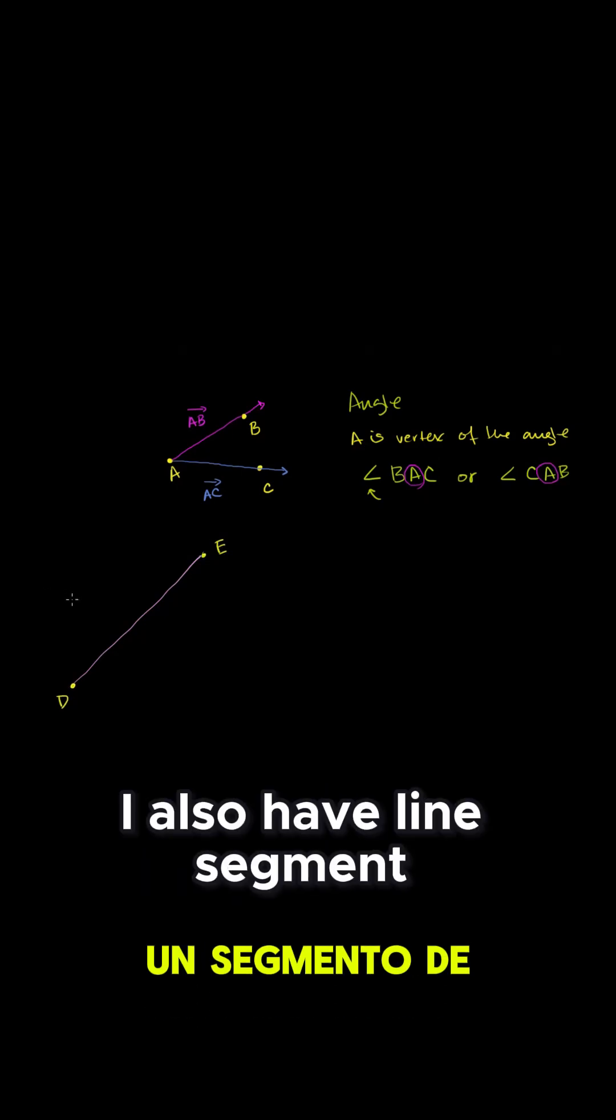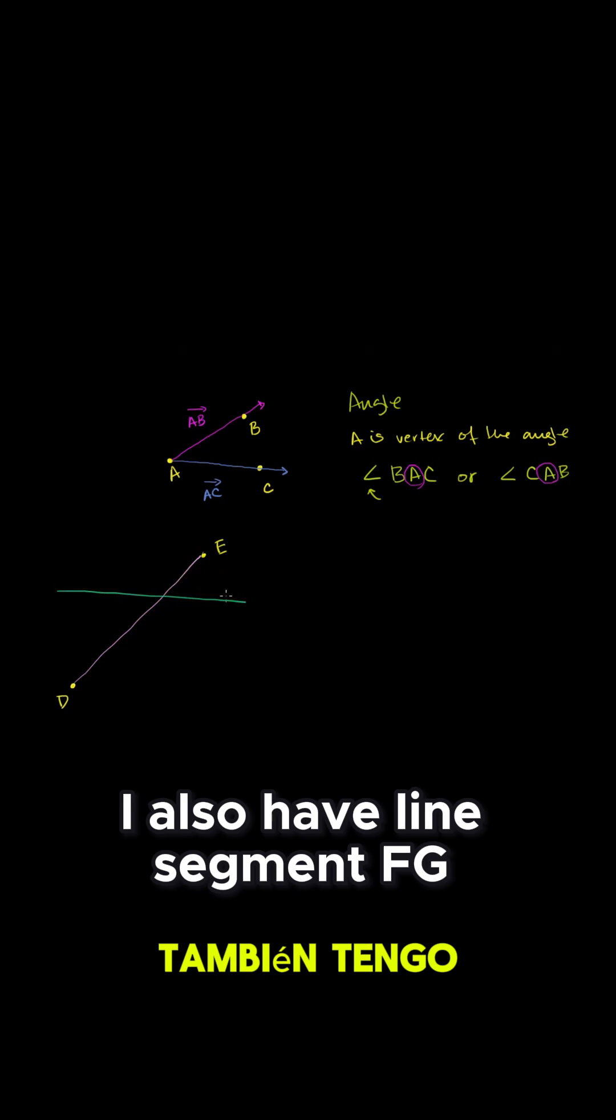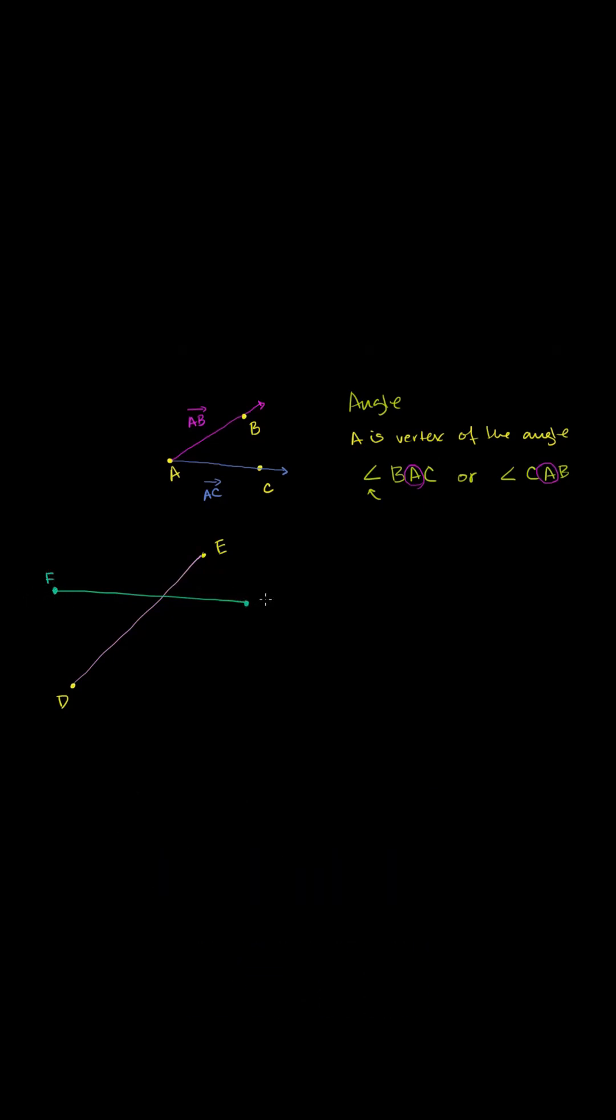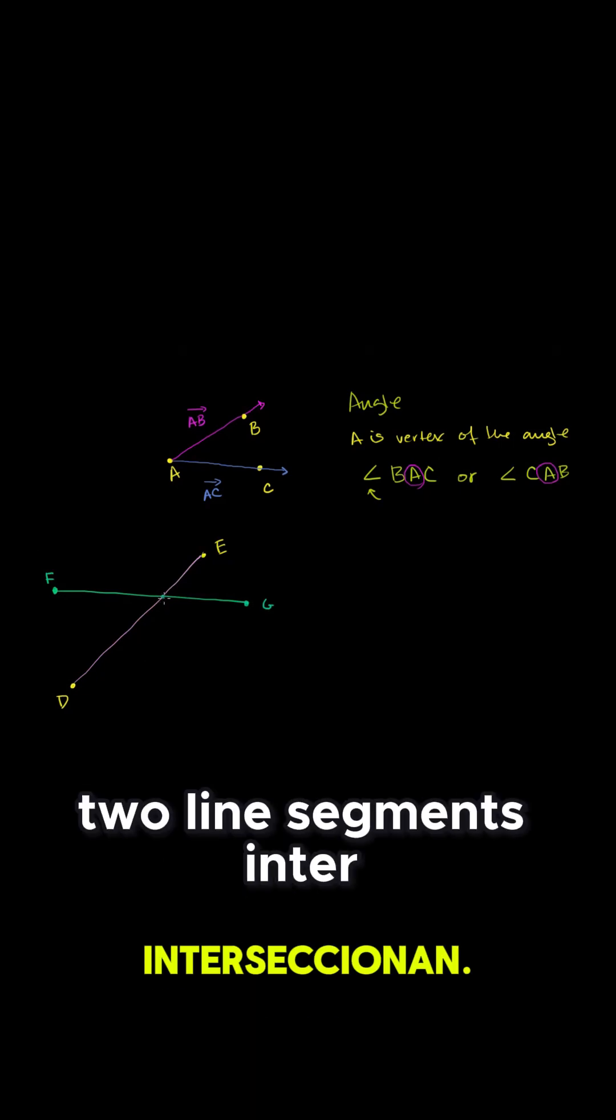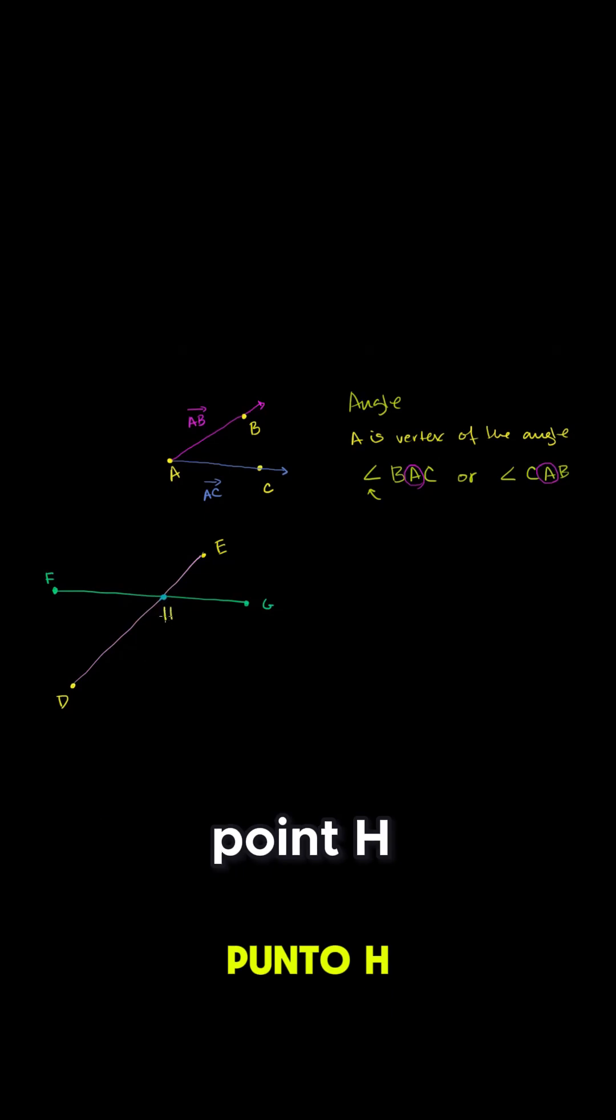And let's say I also have line segment FG. And let's say this point where these two line segments intersect, let's call that point H.